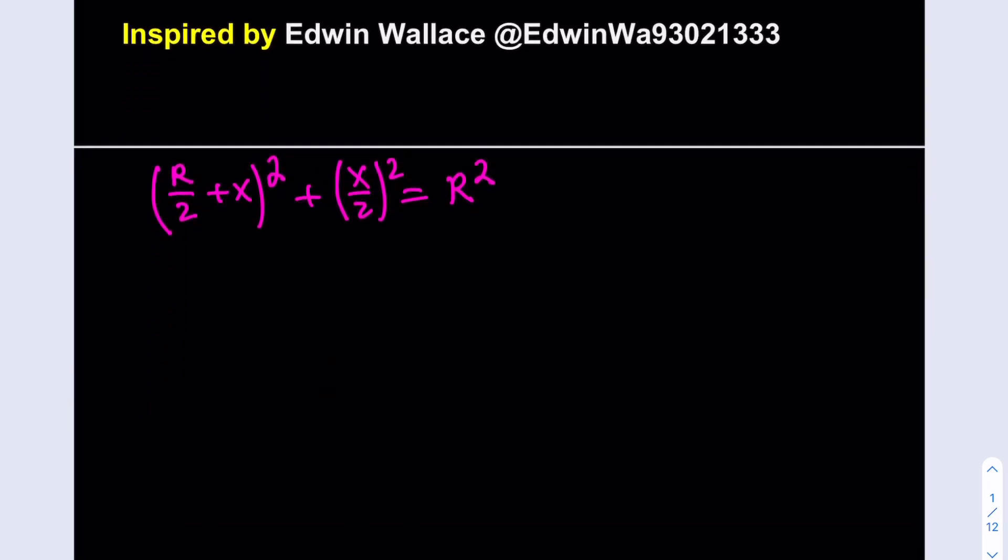I'm going to expand it. r squared over 4 plus r times x plus x squared plus x squared over 4 equals r squared. I'll put everything on the same side. Let's see which side is going to be better.